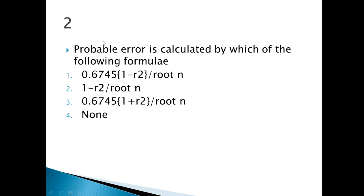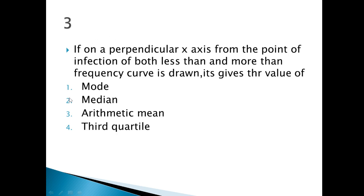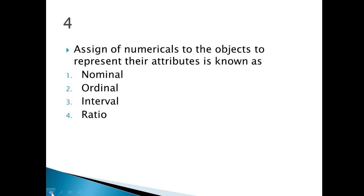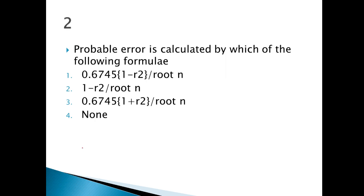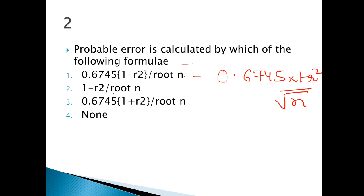Coming to the next question of the day — this question is about probable error. Probable error: how can we calculate it? There are 4 options available to you. The first option is 0.6745 multiplied by (1 minus r squared) upon under root n.